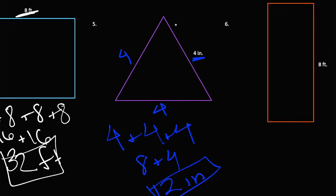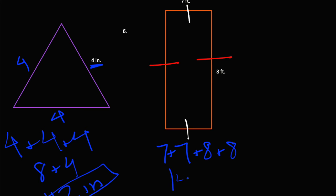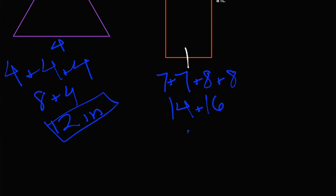Then we have a rectangle — this one is 7 by 8. Since we know there are only two side lengths, this one and this one are the same, and that one and that one are the same. So we can do 7 plus 7 plus 8 plus 8. 7 plus 7 is 14, and 8 plus 8 is 16, and 14 plus 16 equals 30. Since it's in feet, we know that it's 30 feet — which is our perimeter.